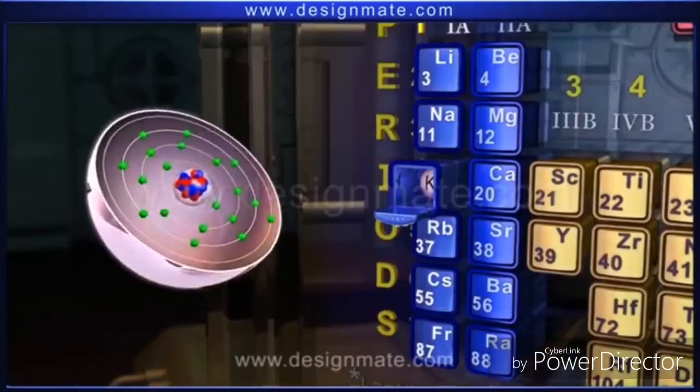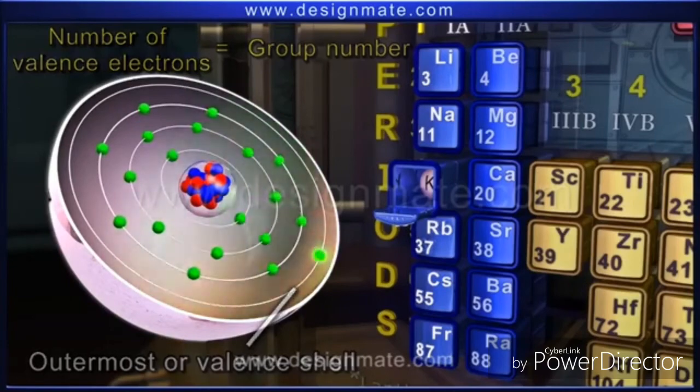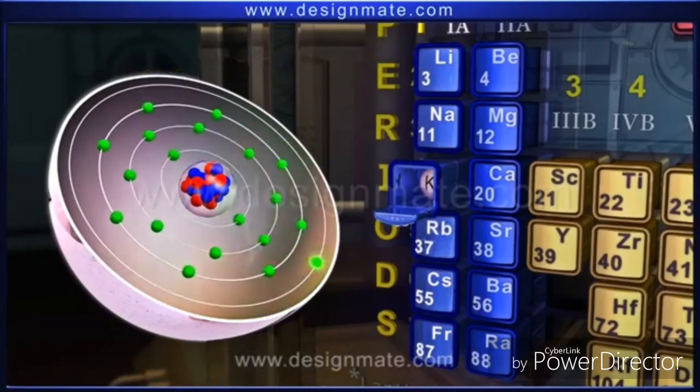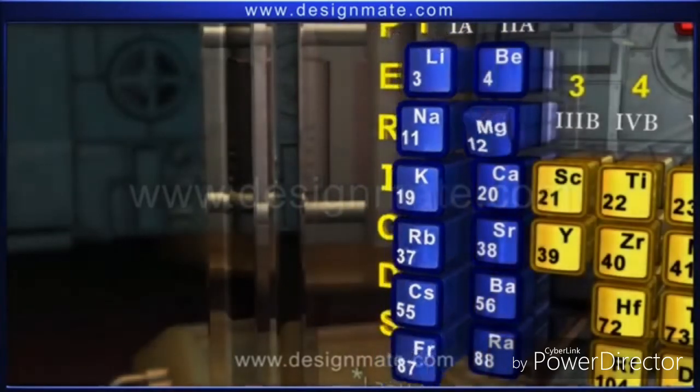Also, the number of valence electrons decides the group number. Here, potassium contains 1 electron in the outermost energy level, which means potassium belongs to group 1A.